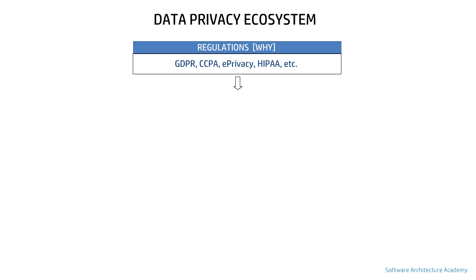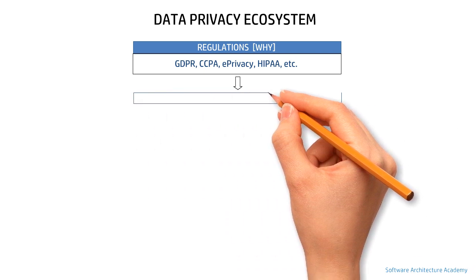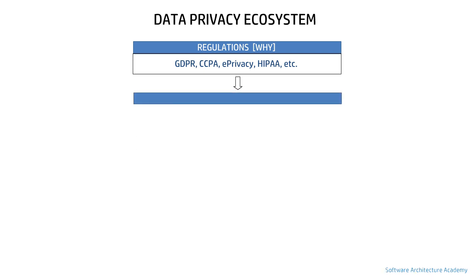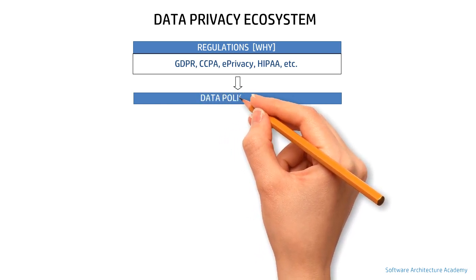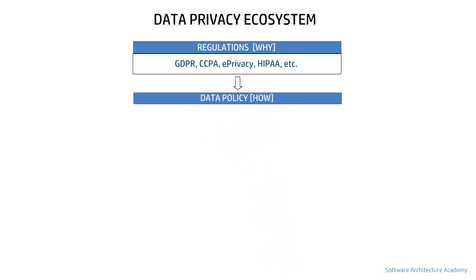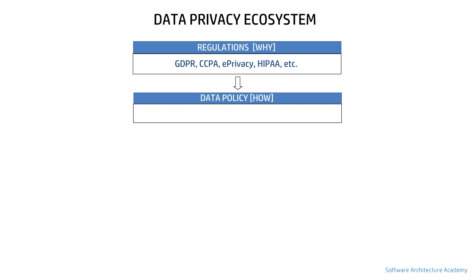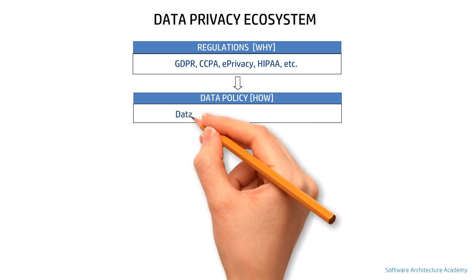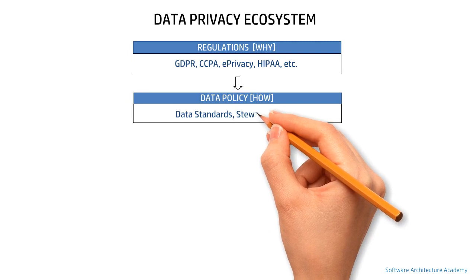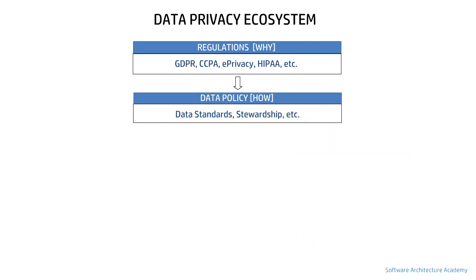Now let's discuss how. The regulations we talked about help formulate or shape an organization's data policy or data governance policy — I have covered building blocks of data governance in a separate video. In a nutshell, this data policy with respect to data privacy covers the rules that govern data privacy in an organization and the standards that should be followed in all phases of the data privacy life cycle.